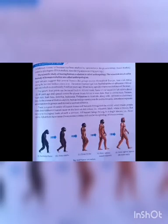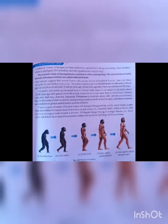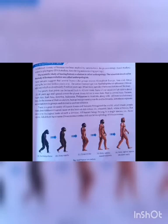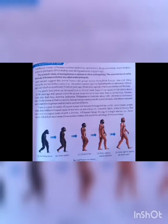Last, human evolution. The evolutionary history of humans has been studied by various tools like palaeontology — that is the study of fossils — molecular phylogeny, DNA studies, time dating and excavating. The scientific study of tracing human evolution is called Anthropology. The scientists involved are called Anthropologists. Fossil records suggest that several human-like groups existed throughout Europe, Asia and Africa during the last 4 million years. The earliest human type was Australopithecus africanus, which evolved nearly 5 million years ago.